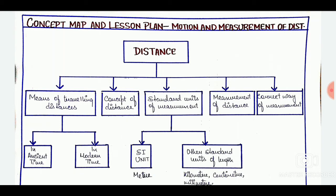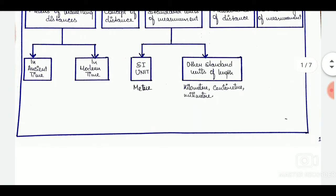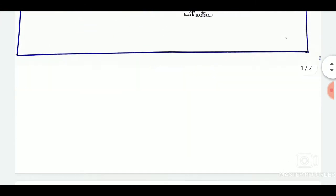Here is our next lesson plan from the chapter 'Motion and Measurement of Distance' from Class 6th in NCERT textbook. At the beginning we are again having the concept map. In the concept map, as usual, we are highlighting the important points by putting them in boxes. So this was our concept map.